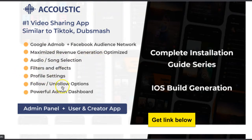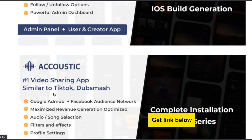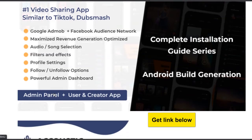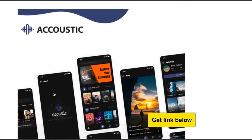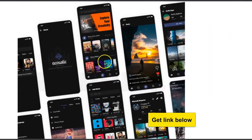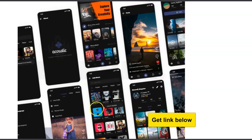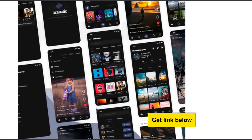It has features like filters and effects, profile settings, and follow — just like TikTok. You can give it to a software developer and they will edit the names, colors, put your company logo, put your name, and change features the way you want. Then you upload it to the Play Store. Look at what the app looks like — it has different themes, including a dark theme.